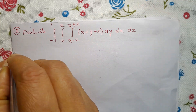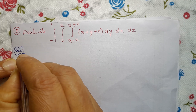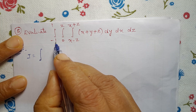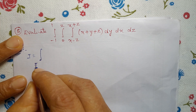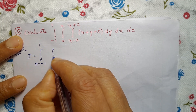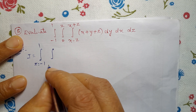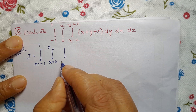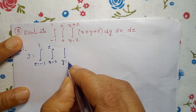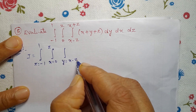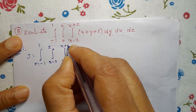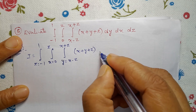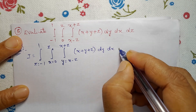Solution for this problem. I equals the integral with Z limit minus 1 to 1, X limit 0 to Z, and Y limit from Y equals X minus Z to X plus Z, of X plus Y plus Z, dy dx dz.